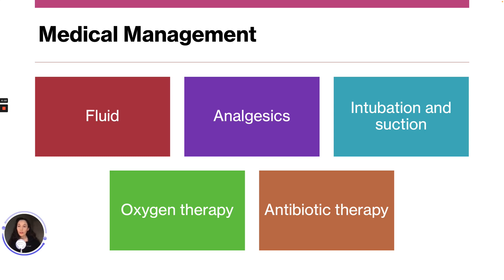Medical management for these patients includes the administration of several liters of isotonic solution. We can also use analgesics for pain. They may need intestinal intubation and suction to assist in relieving abdominal distension and promoting intestinal function. They may need oxygen therapy to promote adequate oxygenation, and antibiotic therapy is usually initiated early in the treatment of peritonitis.